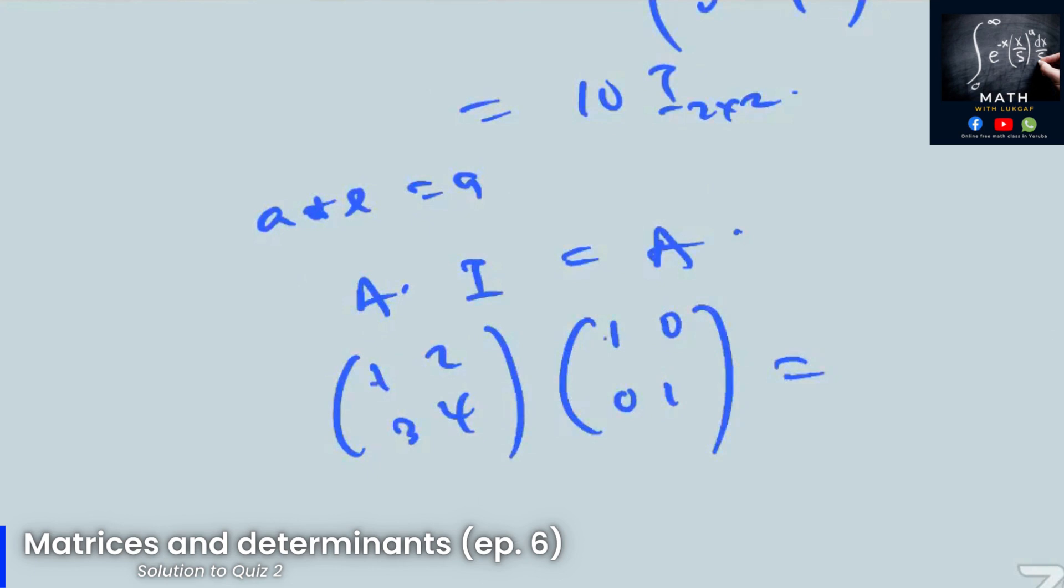Now 1 times 1 is 1, plus 2 times 0 is 0. 1 times 0 is 0, plus 2 times 1 is 2. 3 times 1 is 3, plus 4 times 0 is 0. 3 times 0 is 0, 4 times 1 is 4. So [[1, 2], [3, 4]].